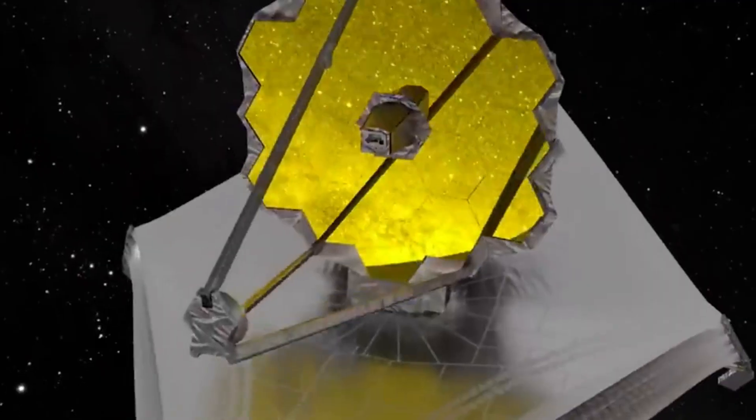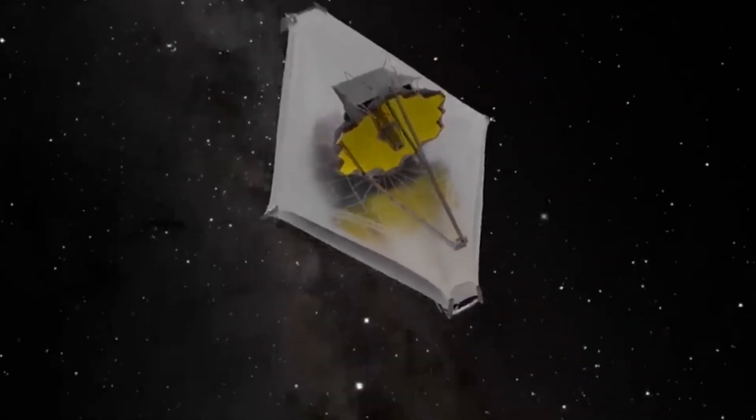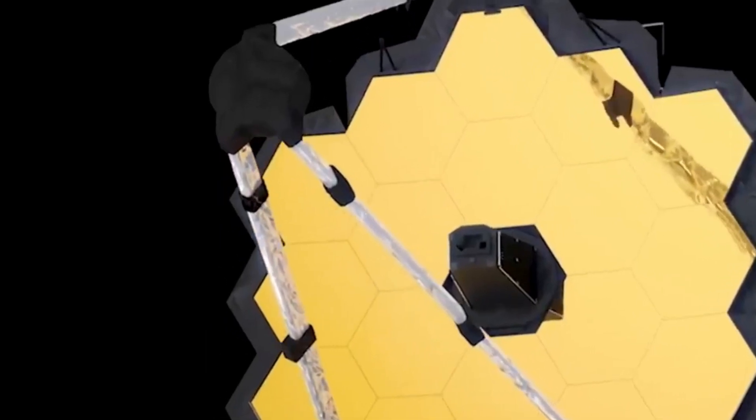From the outset, the James Webb Space Telescope was a collaborative effort involving NASA, the European Space Agency (ESA), and the Canadian Space Agency (CSA). Together, these nations shouldered the additional expenses.